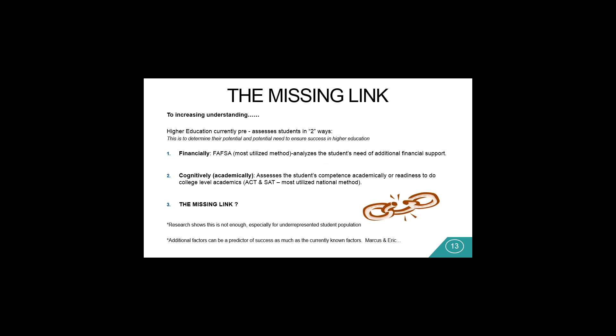Let us look at the missing link. Currently in higher education, we assess students systematically in two ways. One is through the FAFSA — we financially assess them. Two is cognitively — academically, we assess them through ACT, SAT, and other institutionalized cognitive tests. We found that's not enough, especially for underrepresented student populations and especially the African-American male population. That wasn't enough of their story. We found that we needed to know more about their journey, more about their story, in order to effectively serve them — and there were other factors that had as much to do with their persistency. We needed a tool that would provide us that insight.